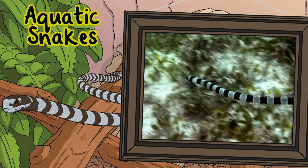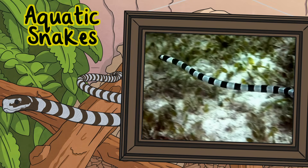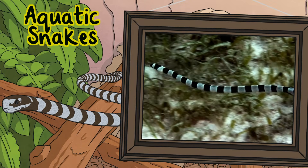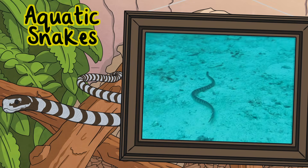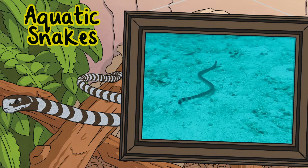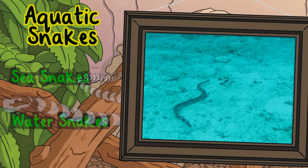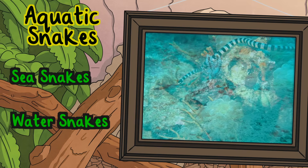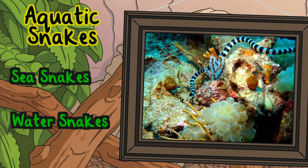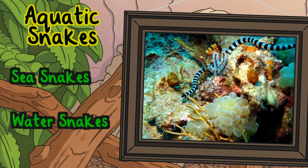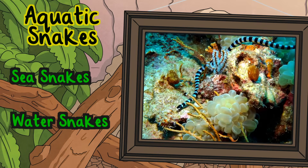Aquatic snakes. These snakes have adapted to living in or near water. These types of snakes include sea snakes and water snakes.